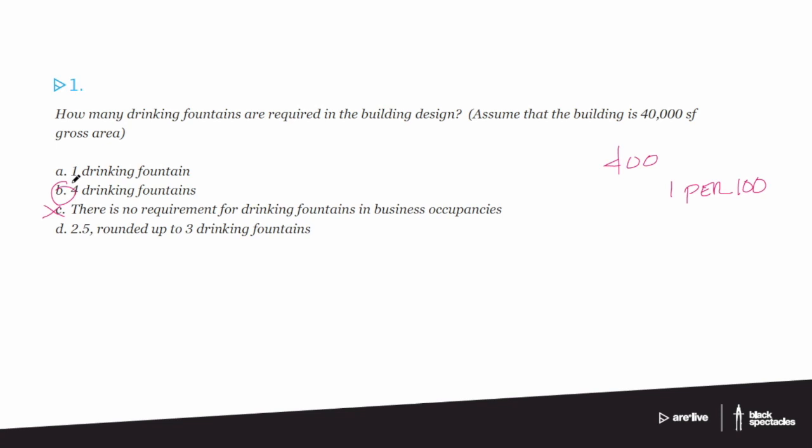So our actual number is 400 people, and the requirement is one drinking fountain per 100 people, which means four drinking fountains — answer B is correct. There are a couple of questions from folks asking about the search tool. There is a search tool, and at Black Spectacles we built our practice exams with the exact same tools that NCARB has on the real exam, so it looks the same. If you use our practice exams you'll get a sense of how to use the search tool, with good tabbing and search functionality. In this context we had to scroll through everything, so apologies for that.